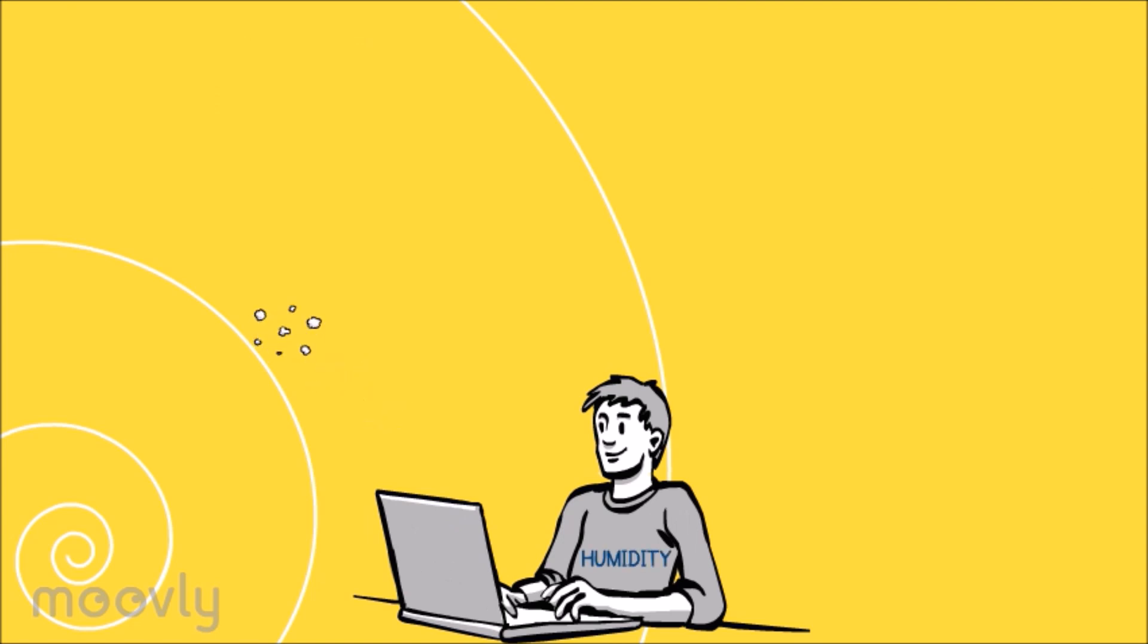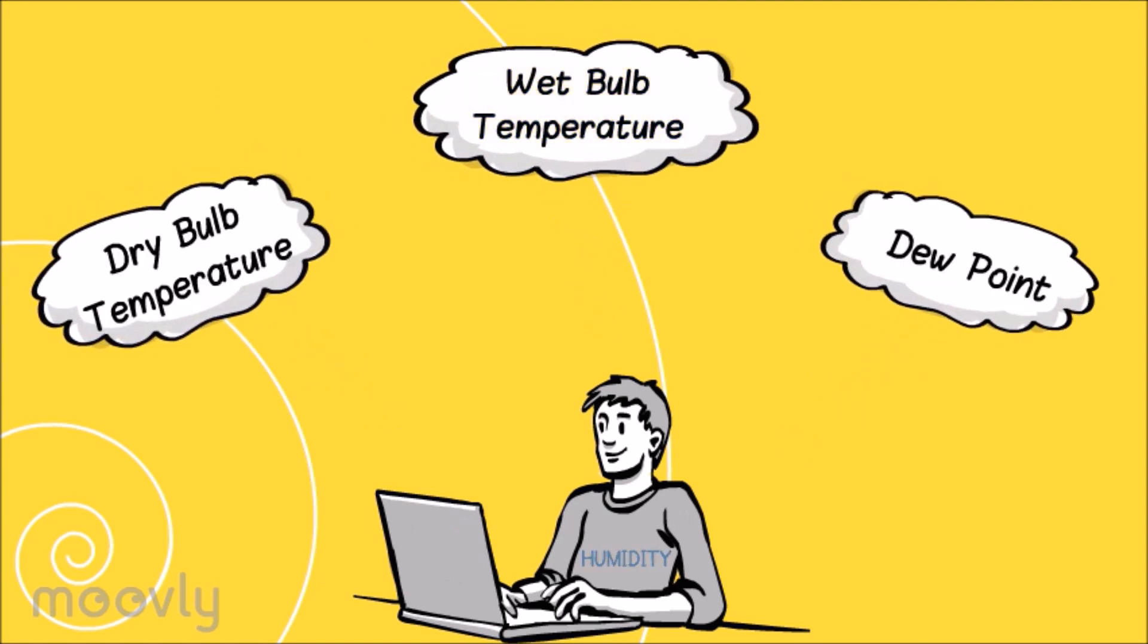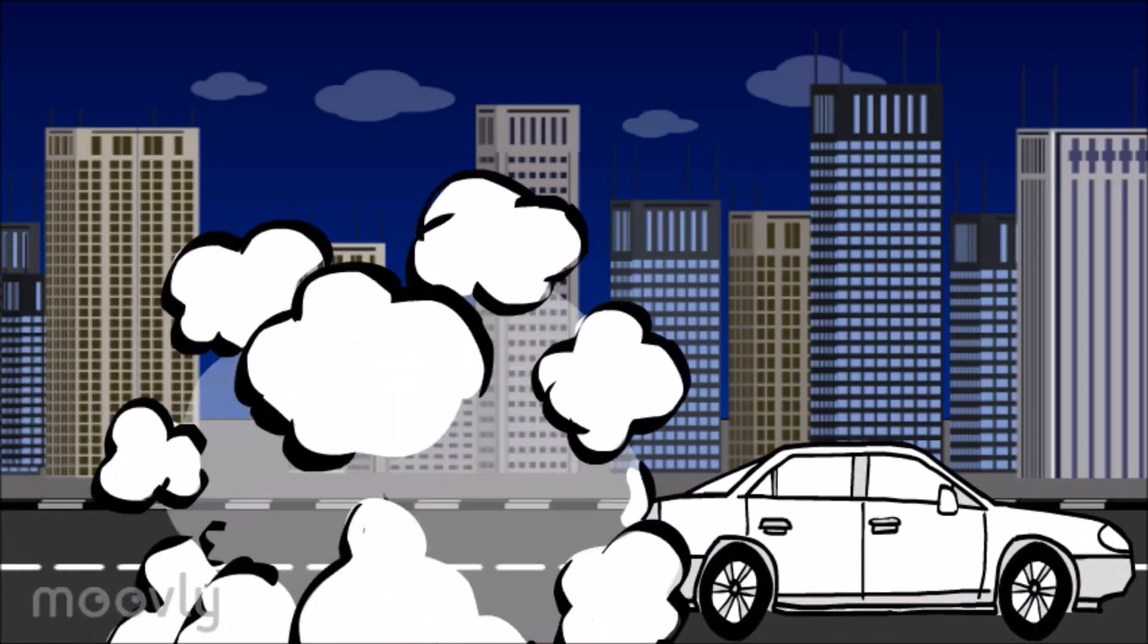Humidity can be related to dry bulb temperature, wet bulb temperature and dew point. Let's start with the dry bulb temperature.